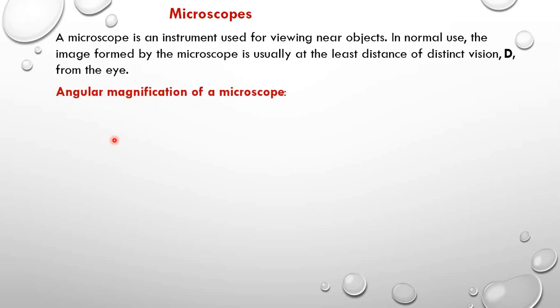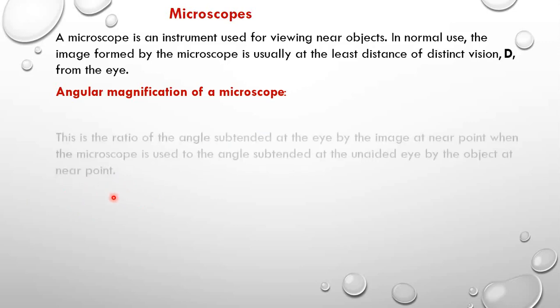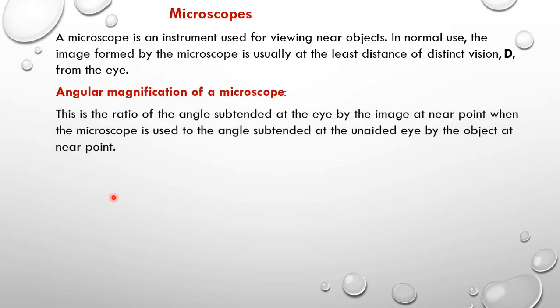Let's look at angular magnification of a microscope. For a microscope, this is the ratio of the angle subtended at the eye by the image at the near point when the microscope is used, to the angle subtended at the unaided eye by the object at the near point.